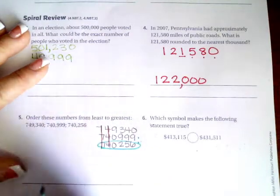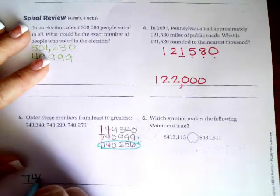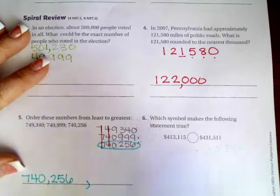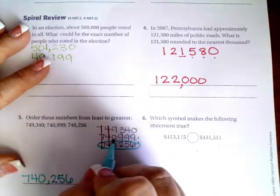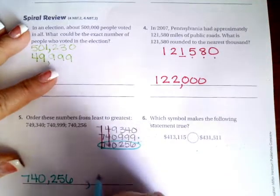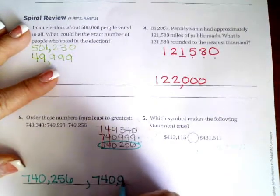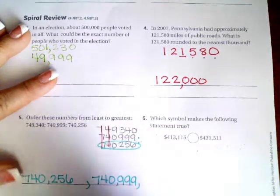Which means this one's going to be first. So 740,256. Okay. Now the only other one that has a zero here is going to be the one with nine, nine, nine after it. So I'm going to put 740,999.